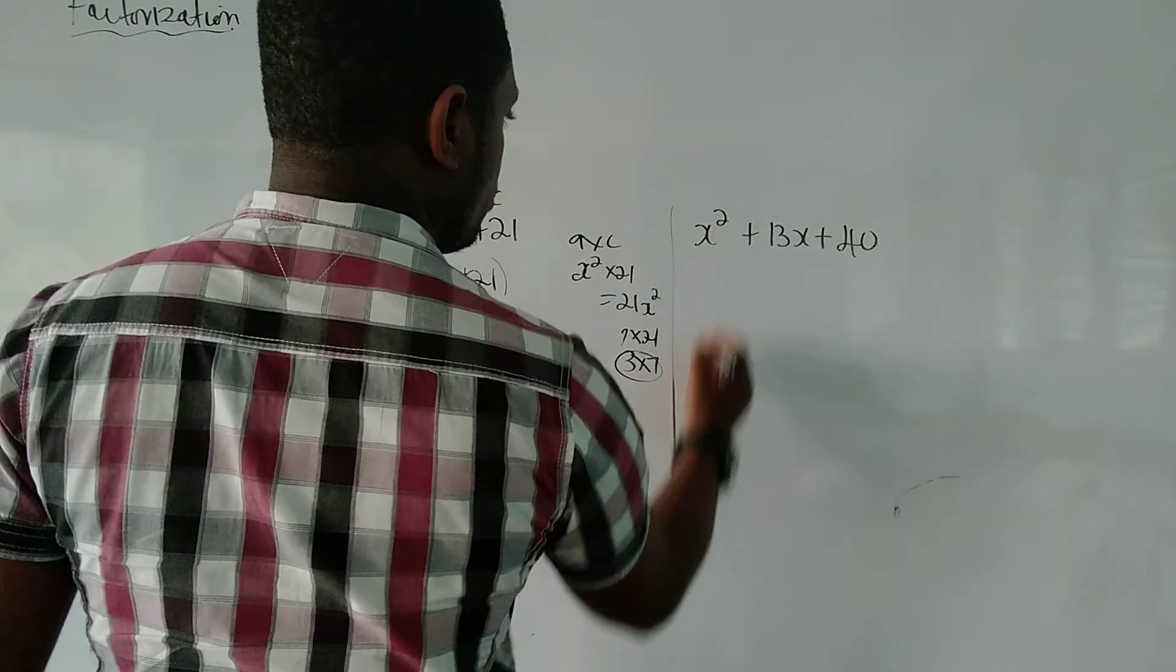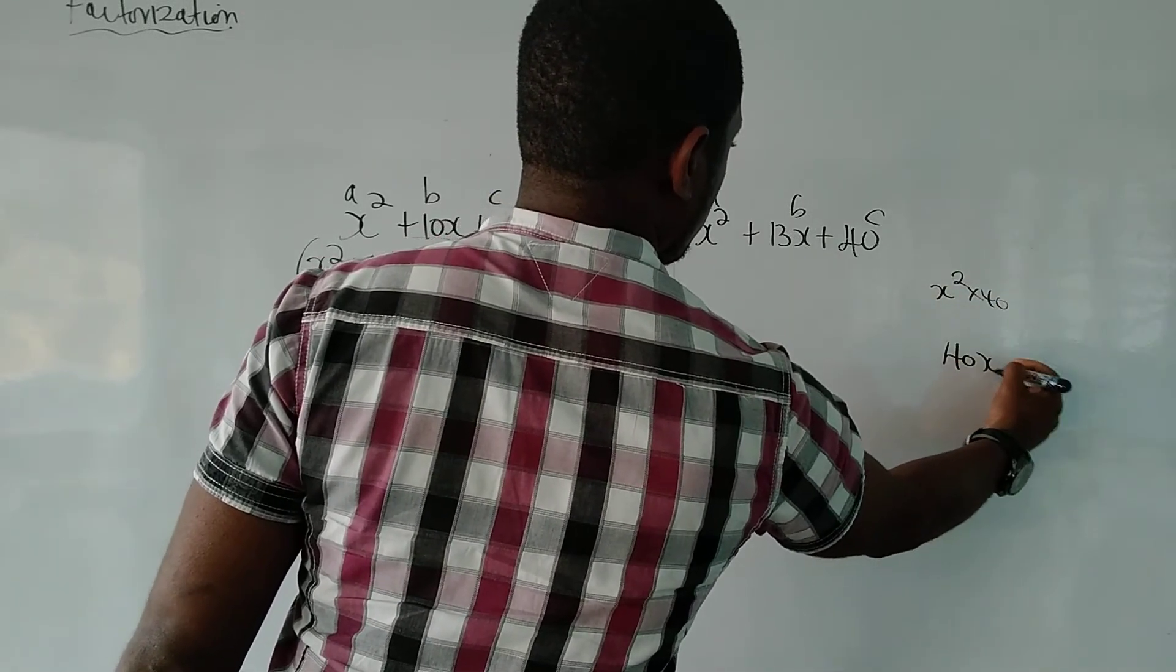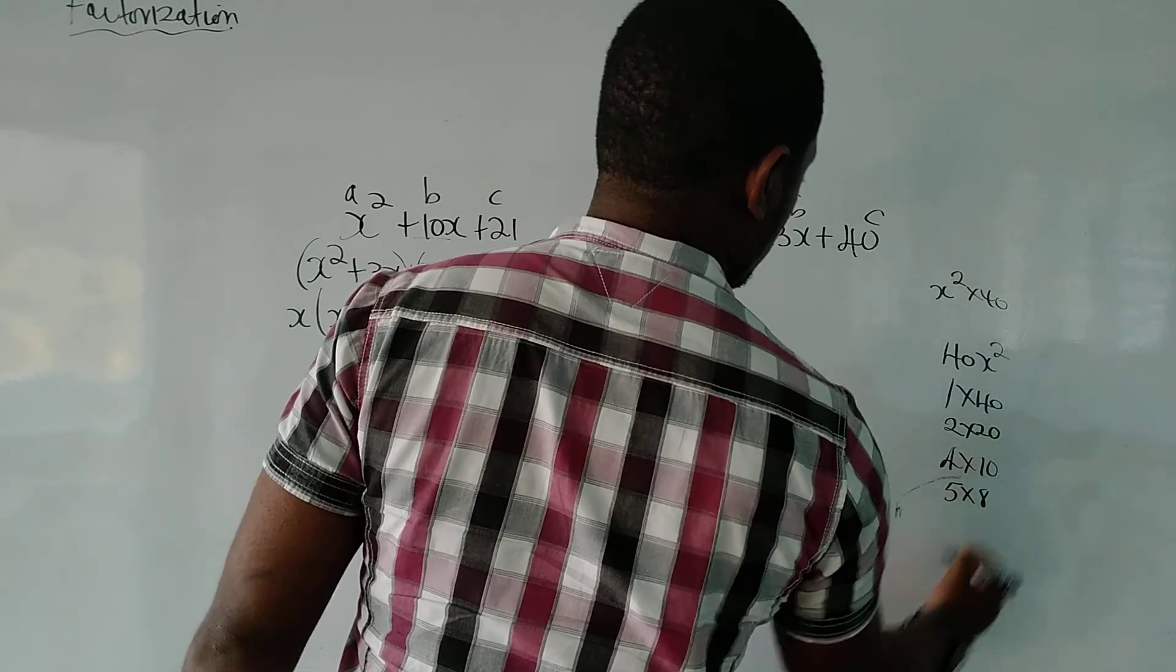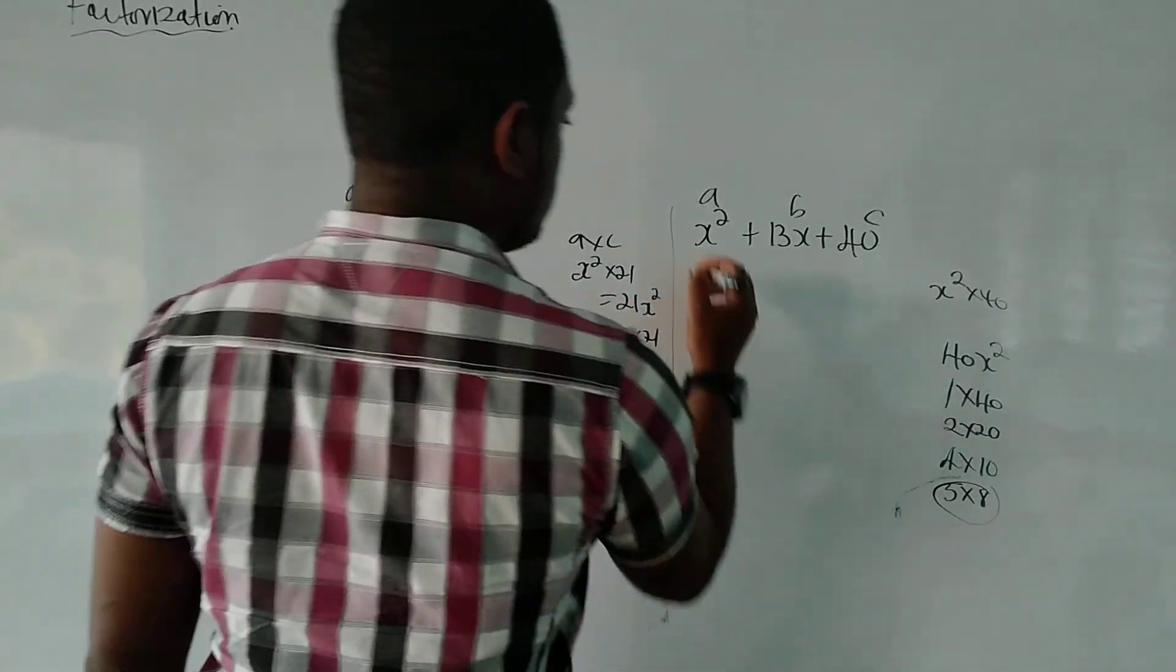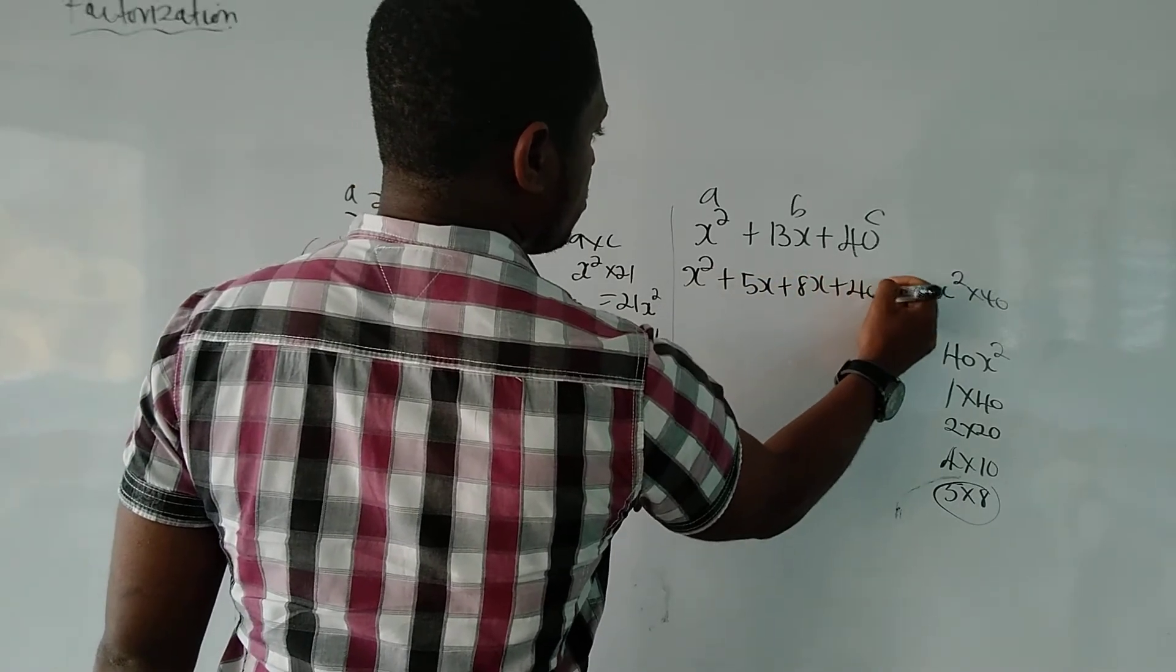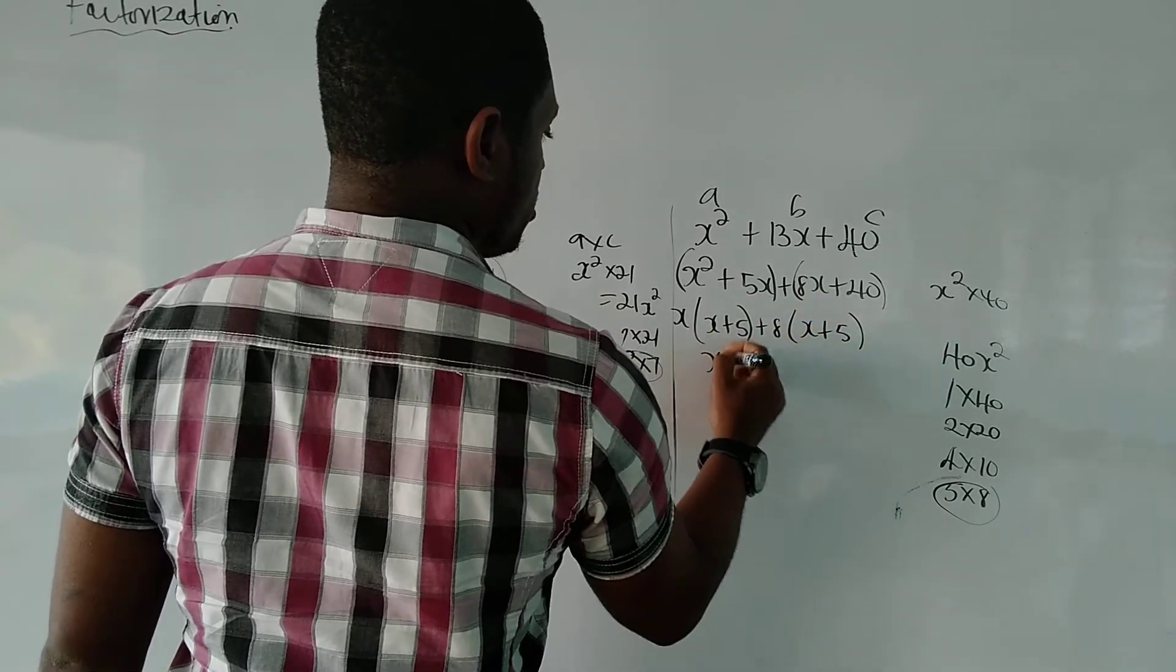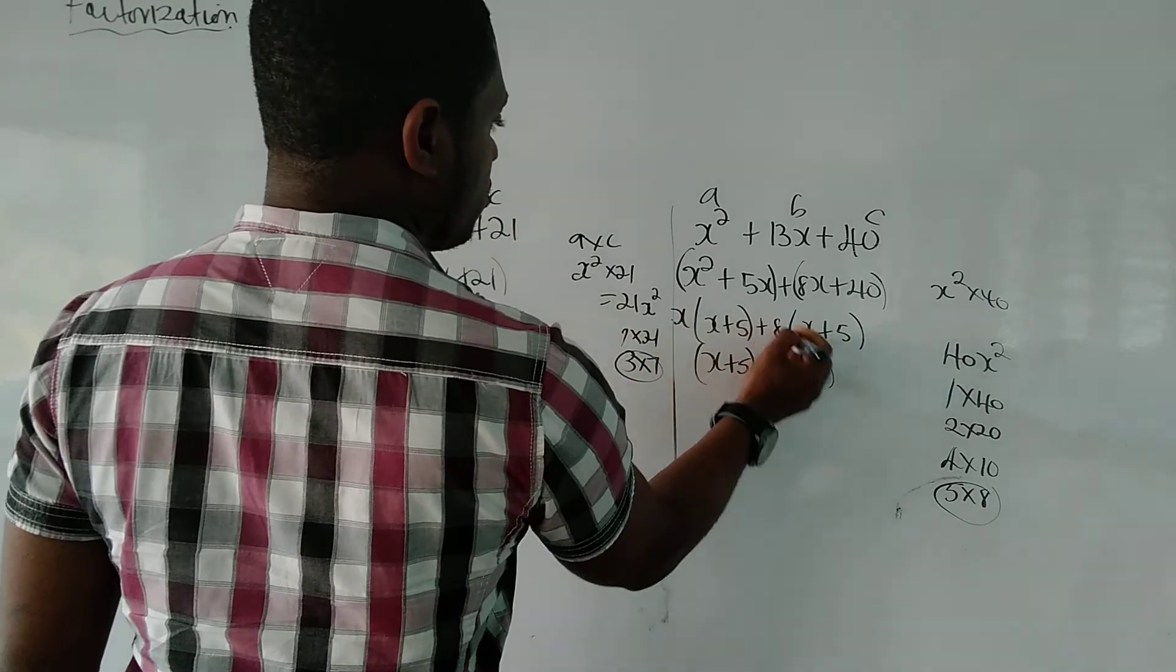Final one. And then I'll give you guys one. So x squared plus 13x plus 40. So a, b, c. x squared times 40 gives us 40x squared. And it's all the factors of 40. 1 times 40, 2 times 20, 4 times 10, 5 times 8. And I think that's it. So from this, 5 plus 8 gives us 13. So it's x squared plus 5x plus 8x plus 40. Bracket it. Take out the highest common factor. x times x plus 5. 8 times x plus 5. So it's x plus 5 and x plus 8. And that is our answer.